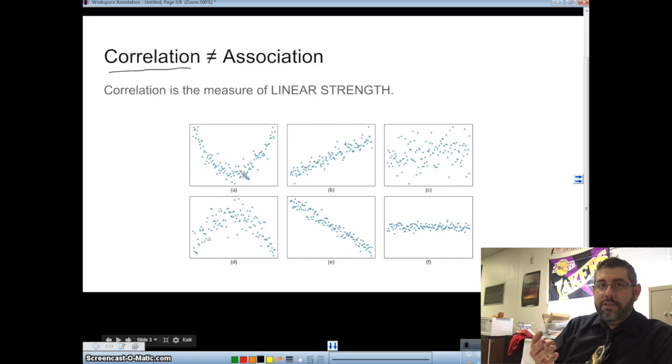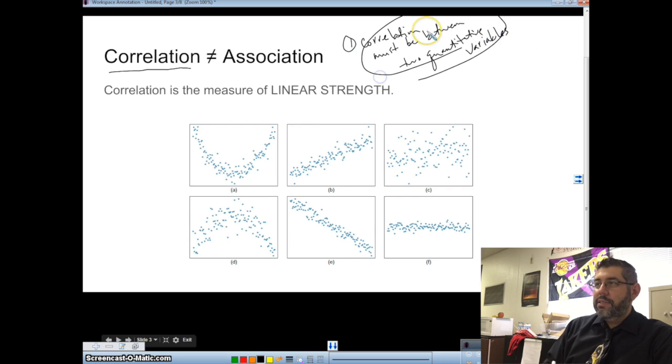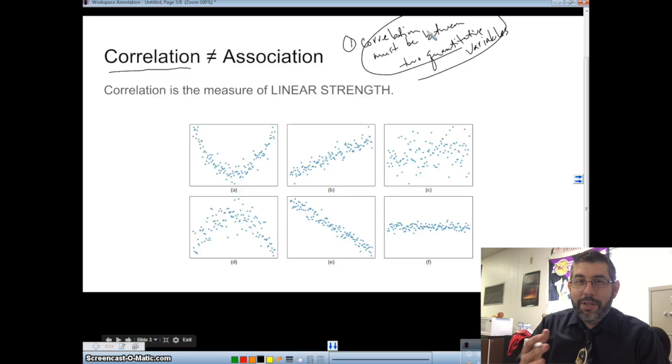And what I'm going to quickly just say here is that correlation, the word correlation, does not mean association. Those are two different things. Correlation does not mean association. So two things just can't be correlated. In fact, correlation is a measure of linear strength. A lot of people tend to use the word correlation incorrectly. There's a few important things. One thing here is that correlation must be between two quantitative variables.